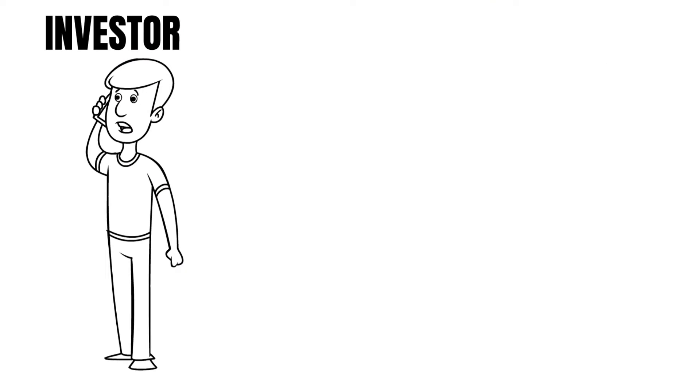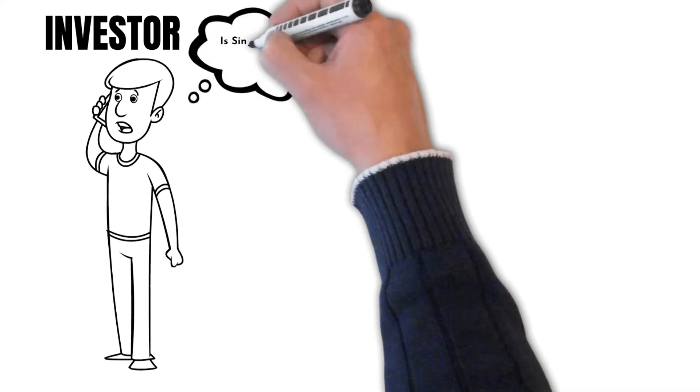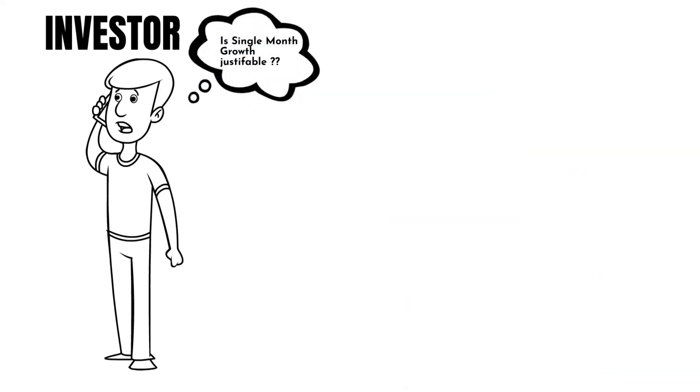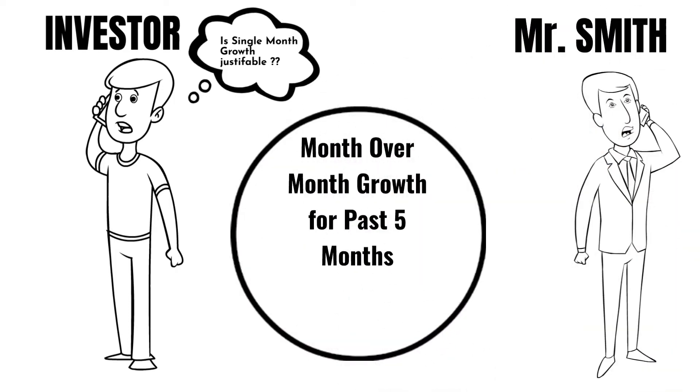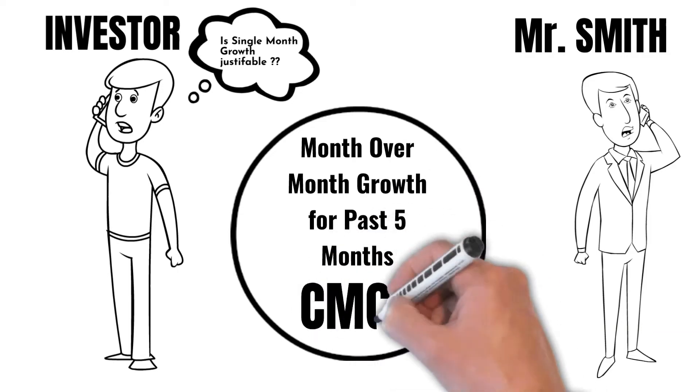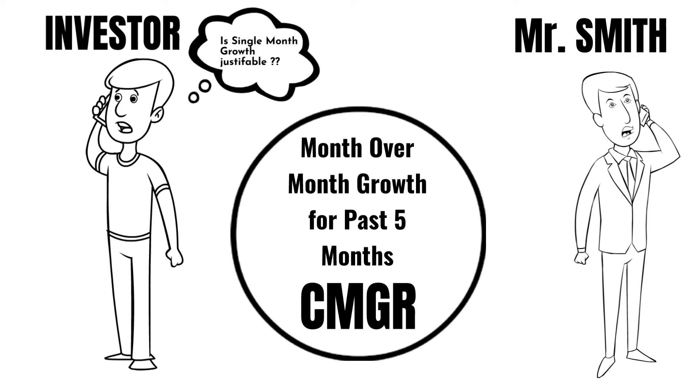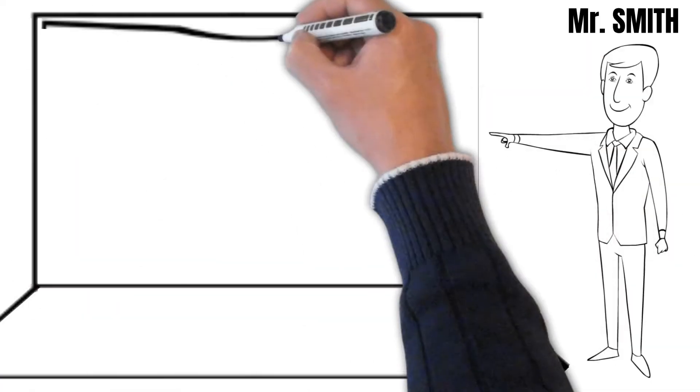Let us check how. Suppose the investors in the above example think a single month's growth cannot justify the huge investment they will make. They ask Mr. Smith to get a month-over-month growth rate for the past five months. But they are asking for basically compound monthly growth rate. The formula to calculate CMGR is: